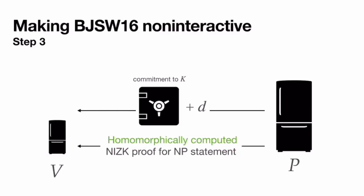Our protocol is an argument, not a proof — it's only sound against computationally efficient provers, due to the homomorphic encryption. We also define in this paper, jointly with Anne Broadbent and Alex Grilo who published independently, the notion of a proof of quantum knowledge — in analogy with the classical proof of knowledge — and we show that this protocol is also an argument of quantum knowledge. Feel free to check out the paper if you're interested, and thanks for listening.